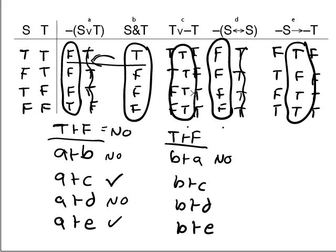Does B entail C? Yes, it does. When B is true, C is also true, and therefore B does entail C. Does B entail D? The answer is no. There's a T to F right there. Does B entail E? The answer is that yes, it does. Because when B is true, E is also true.